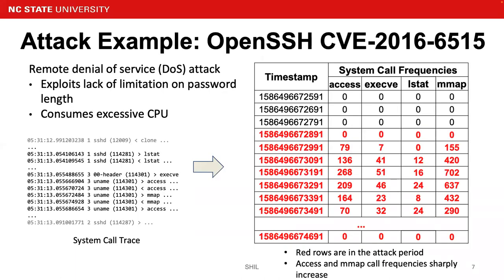I'm going to talk about an attack example: OpenSSH CVE-2016-6515. It is a remote denial-of-service attack which exploits the lack of limitations on password length, resulting in excessive CPU consumption. As you can see, the system call trace samples are shown on the bottom left. Each 100-millisecond system call trace sample is converted into one row of system call frequency vectors on the right. We can see that some entries are in red, indicating they are in the attack period. We can also observe that system call access and NMAP increase sharply during the attack period.